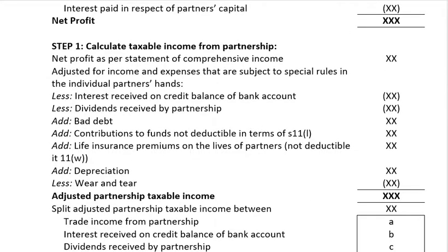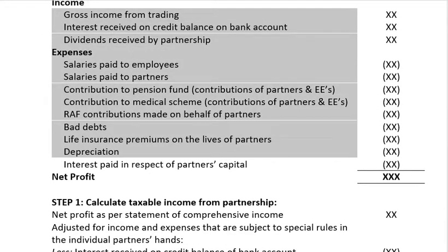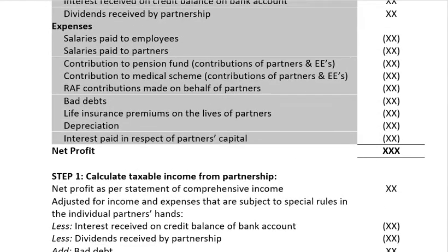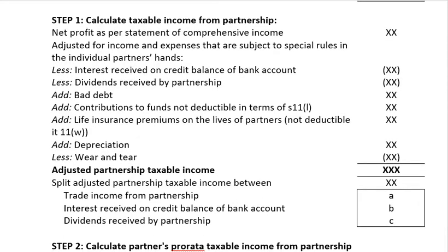Then, you need to take this net profit and use it to calculate the taxable income from the partnership. You take the net profit as per the Statement of Comprehensive Income. Just a quick note: those income and expenses listed are specifically related to partners and partnerships, but there may also be other expenses or income such as a rental expense for the partnership. You adjust this net profit for income and expenses that are subject to special rules in the individual partner's hands.